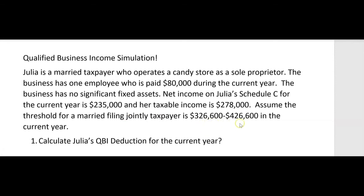Assume the threshold for a married filing jointly taxpayer is between $326,600 and $426,600 in the current year. Every year this goes up, so you won't have to memorize the threshold. As long as your taxable income is low enough — below $326,600 — you can take the maximum QBI deduction. Her taxable income is $278,000, which is well below $326,600, so we won't have any problem limiting her QBI deduction based on that threshold.